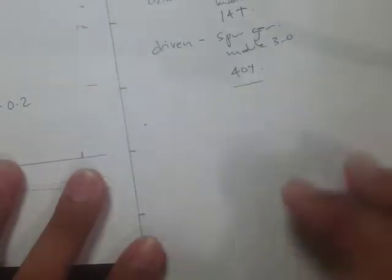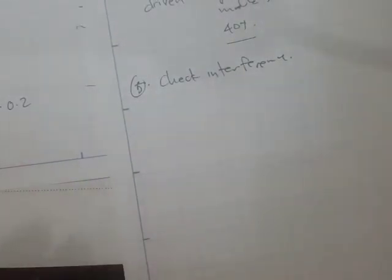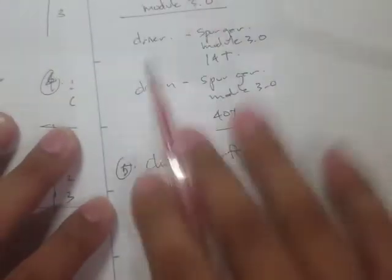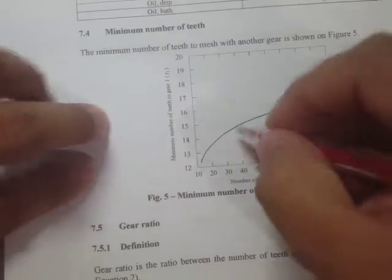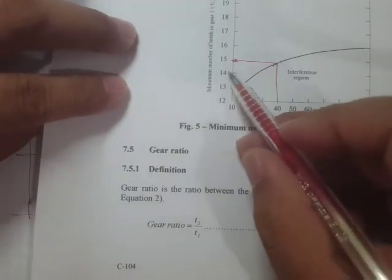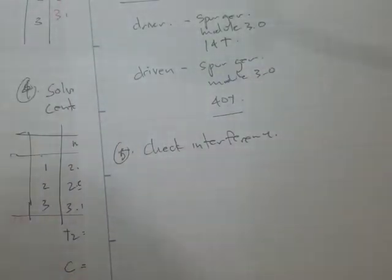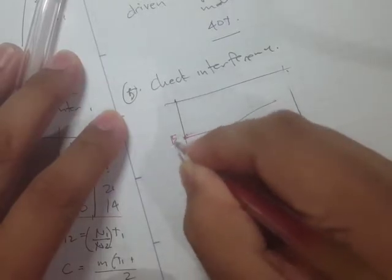So check the interference — this is not yet final. We have the number of teeth in gear two and the minimum number of teeth in gear one. With the 40-tooth selection, the value on the table should be somewhere around 50, so we see that 14 teeth is not possible. We need to draw the table. With 40 teeth, the minimum should be at least 15.